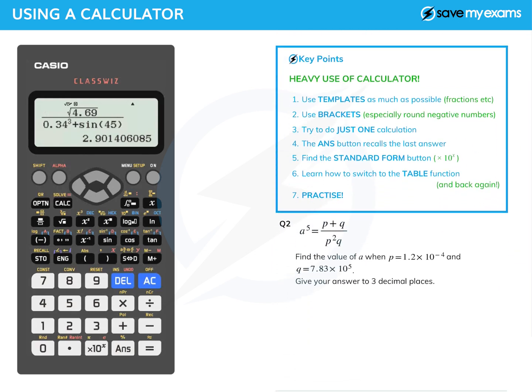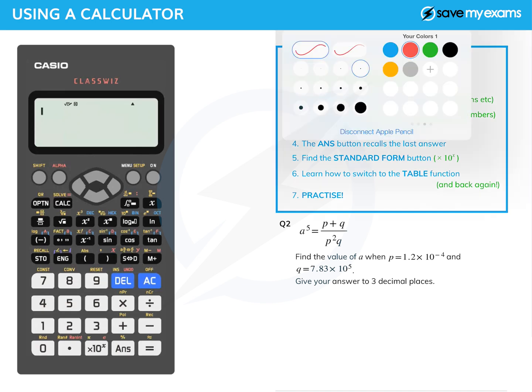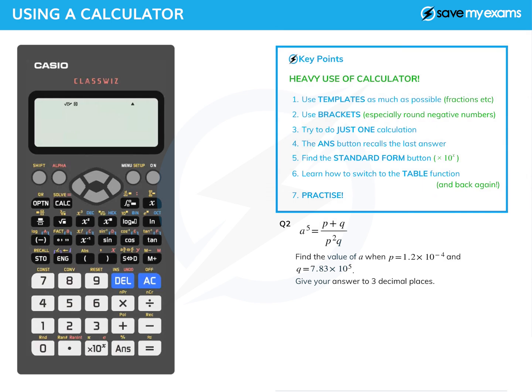Have a look at the second question. We're going to press clear, AC means all clear. Now we've got a formula, so a little bit of work to do first. a to the five is p plus q over p squared q, and we want to find the value of a.